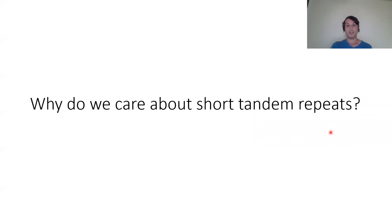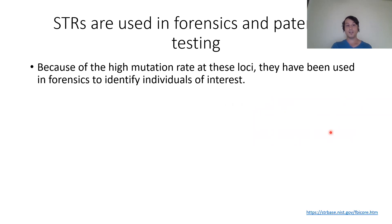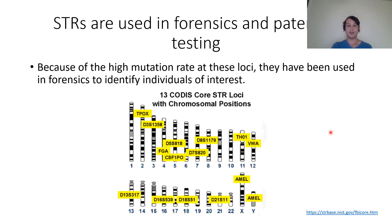Why do we care about short tandem repeats? They've played a big role in forensics and have been found causative for several human diseases. Because of their high mutability and thus high heterogeneity throughout humans, STR loci have been used in forensics and paternity testing. The 13 core CODIS loci are shown here with their locations on chromosomes. With these 13 STRs, the likelihood of an individual matching all 13 perfectly is one in several billion. The panel has since expanded to 16 or 20 in some places.